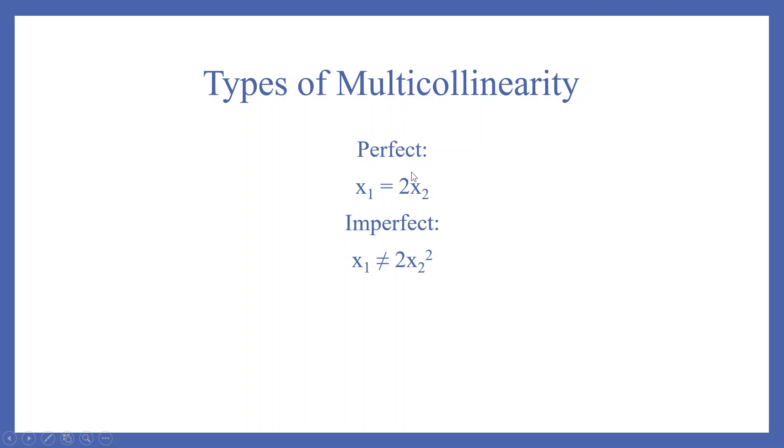This is an example of perfect multicollinearity: X1 equals 2X2. Imperfect multicollinearity: X1 equals 2X2 squared.